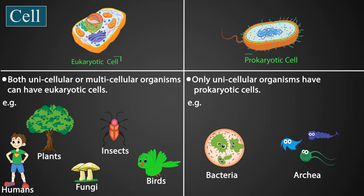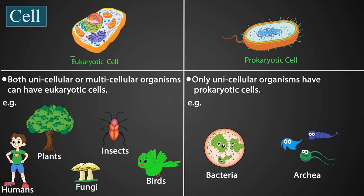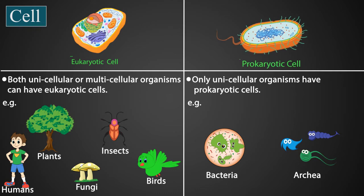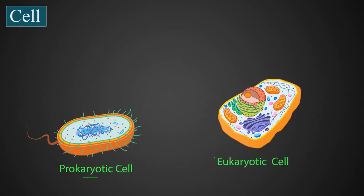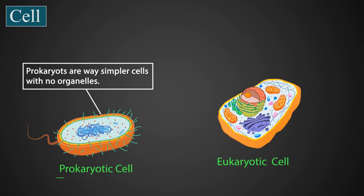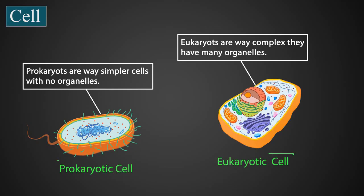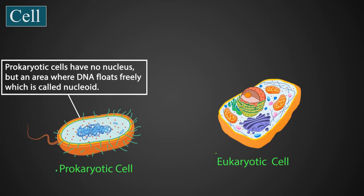We have learned that all organisms from animals to birds, to insects, to humans, and to plants are made up of cells. All types of cells are categorized into two types: eukaryotes and prokaryotes. Prokaryotes are way simpler with no organelles, whereas eukaryotic cells are more complex because they have many organelles. Prokaryotic cells have no nucleus, but an area where DNA floats freely called a nucleoid.